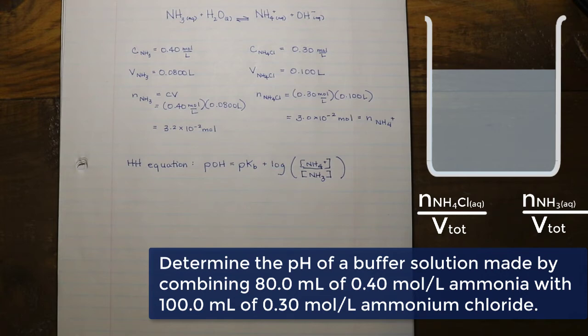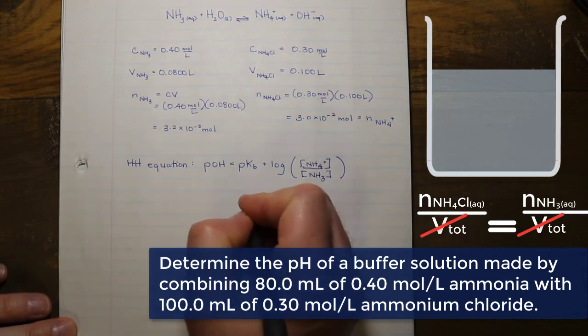For the Henderson-Hasselbalch equation, we would have to use the concentrations in that reaction mixture. But if we keep in mind that the volume is going to be the same for both the concentration of the ammonia and the concentration of the ammonium ion—that is they exist in the same volume of reaction mixture—we can sort of divide that out, meaning we can represent the Henderson-Hasselbalch equation in another way.